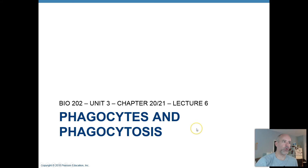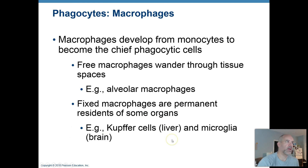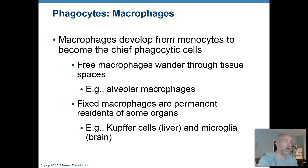For lecture number six, we're going to talk more about phagocytes — cells that can do phagocytosis and those processes. Your chief phagocytes include your neutrophils and your macrophages. These are your main phagocytic cells. There are some others that can do it as well, but those are your top two.